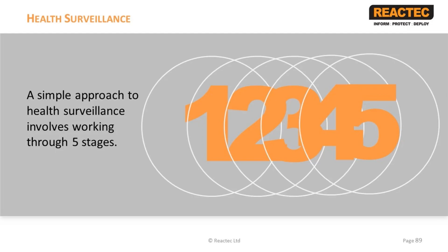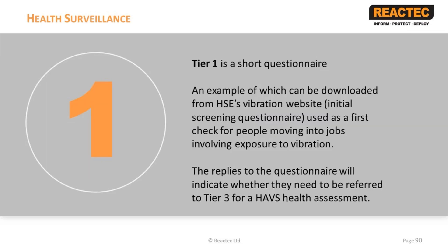A simple approach to health surveillance can involve working through a number of tiers. Tier 1 is a health surveillance program which needs to include an initial assessment, which can be downloaded from the HAV website. This is for any new or existing employee before they begin exposure to hand-arm vibration, and a baseline should be available from which to judge the results of routine health surveillance. The baseline assessment forms Tier 1.